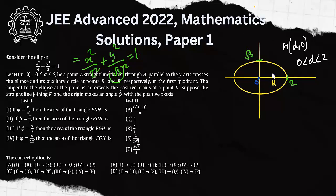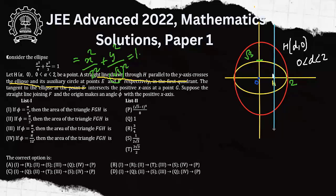A straight line is drawn through H parallel to the y-axis, crossing the ellipse and its auxiliary circle. The auxiliary circle of this ellipse is drawn, and the vertical line passes through the point H with coordinate (α, 0).